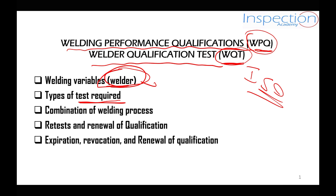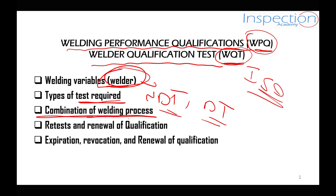We will also talk about the combination of welding processes. If our welders need to use two processes to weld a joint — for example, GTAW and SMAW processes — we will need to know the conditions to perform such a joint. We will also know how to retest the welder, when to retest if he failed, and what the conditions are to retest him. Additionally, we will cover when we need to renew the qualification of our welder and when the welder's certificate is considered expired.